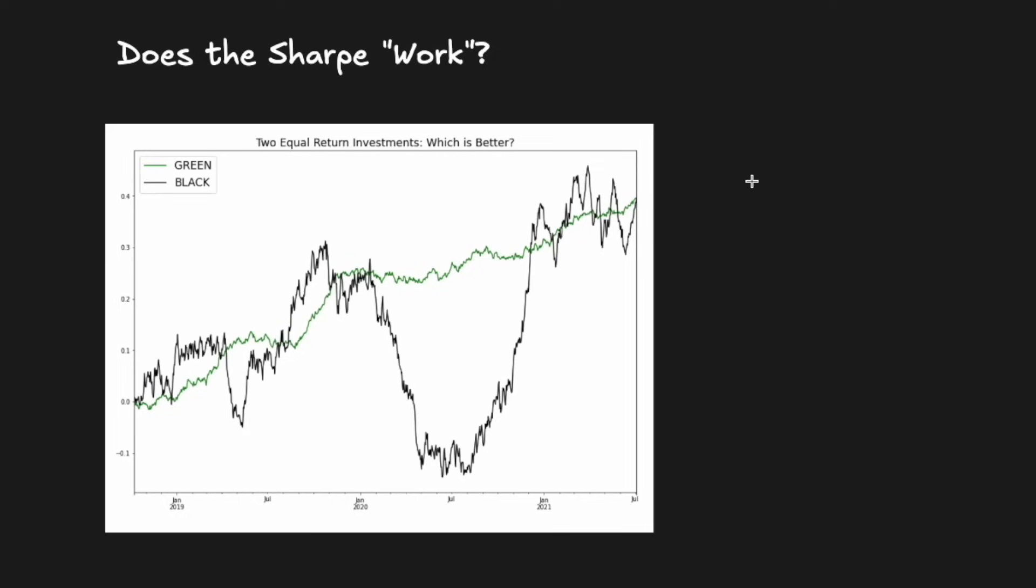So does the Sharpe ratio actually work? In other words, is it able to identify that green is the better investment when returns could not? Coming back to our original graph, we calculated the Sharpe of green versus black as 2 versus 0.5. So yes, the Sharpe works. It reflects this intuition that we have that green is the better investment, while returns alone would say the two are the same. It does this by incorporating volatility to tell you how much return you actually earn per unit of risk you took.